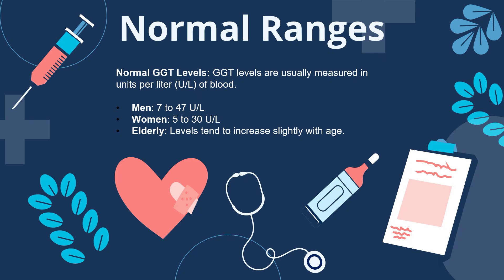What are the normal ranges of gamma glutamyl transferase in the blood report? Normal GGT levels are usually measured in units per litre of blood. In men, this range falls between 7 to 47 units per litre, and in women it ranges from 5 to 30 units per litre. In the elderly, levels tend to increase slightly with age.